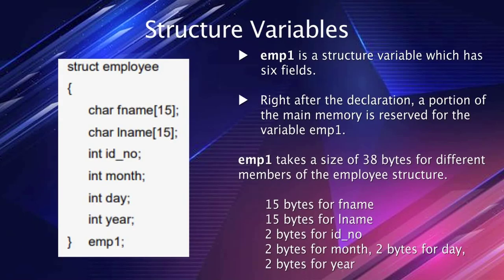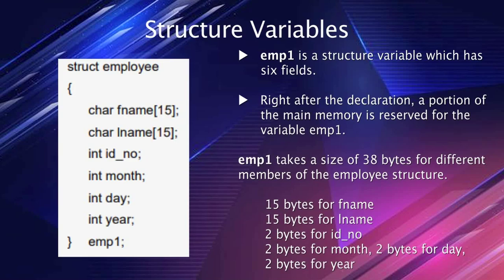For the employee structure, two character arrays are declared for first name and last name, and integer variables for identity number, month, day, and year. After declaring the structure, one employee variable emp1 is declared. This variable has six fields — some integer and some character arrays. Right after declaration, memory is reserved for emp1: 15 bytes for first name, 15 bytes for last name, 2 bytes each for ID number, month, day, and year — totaling 38 bytes.